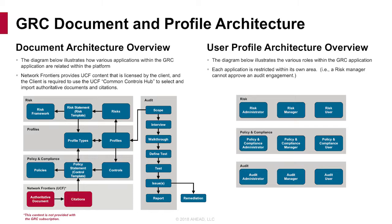The reason for that is data privacy - maybe I have a data privacy policy, process, or risk process associated to it that I want to apply across my organizational perspective. But I have different risks and controls because data privacy in North America is different than data privacy in the EU. That's how we encapsulate those different items and point regulatory requirements to the respective area.